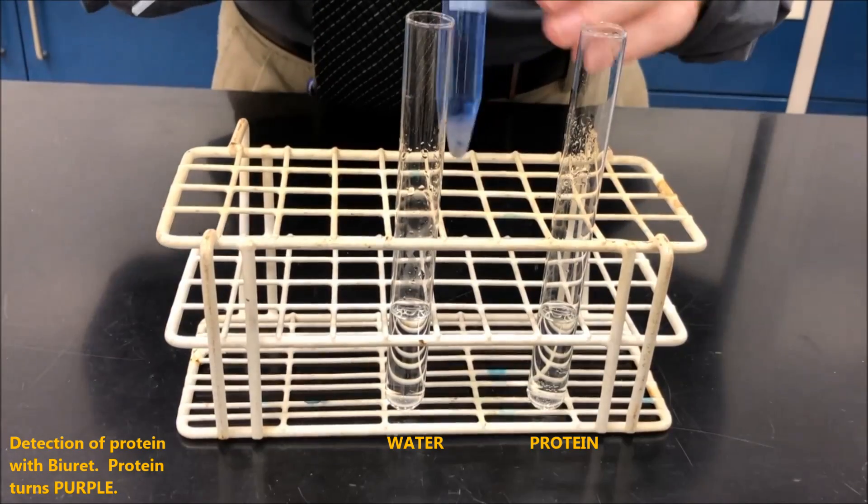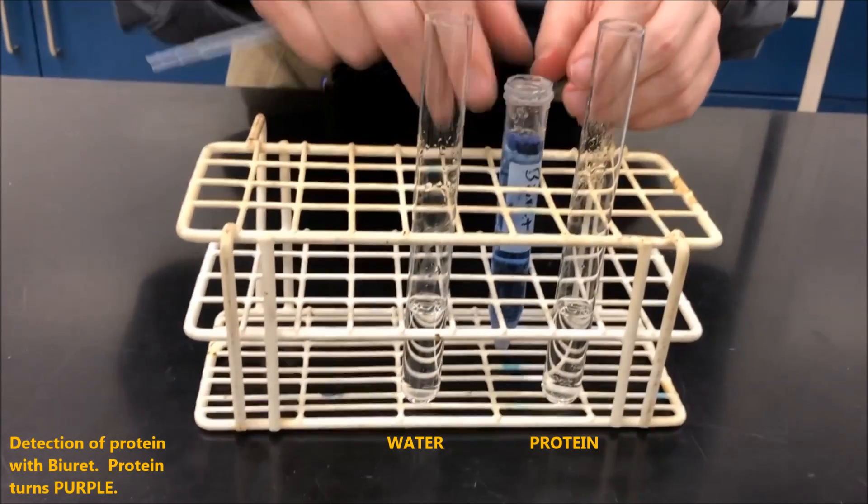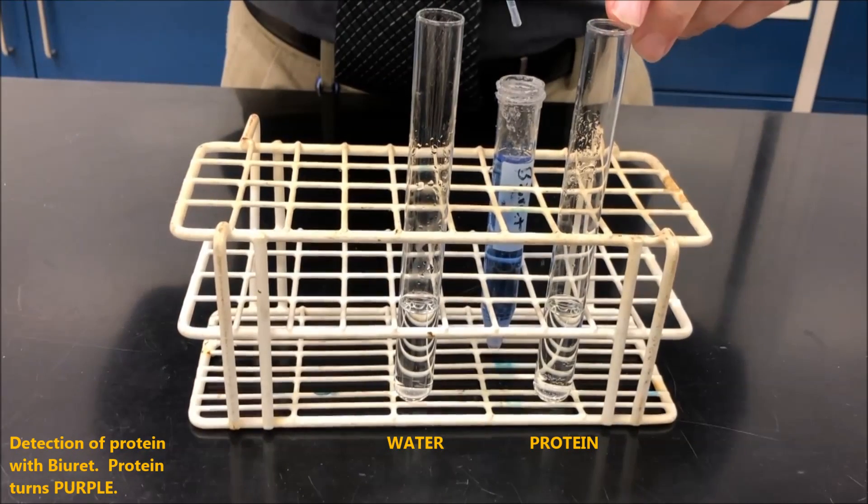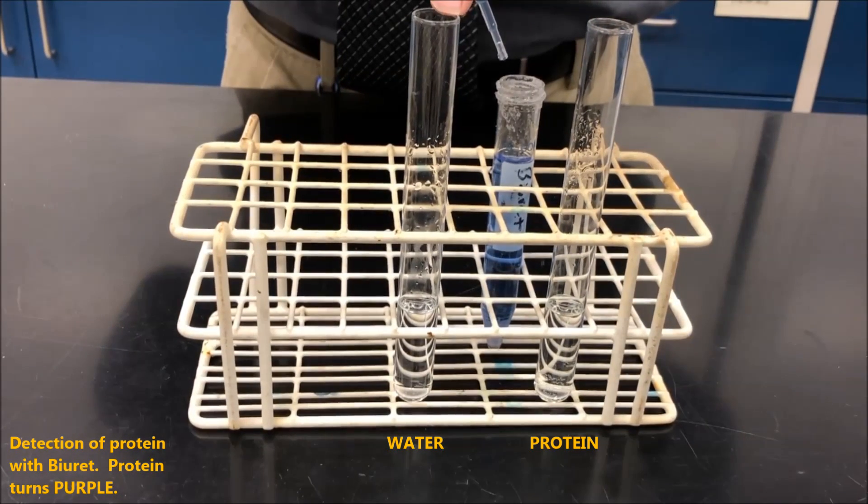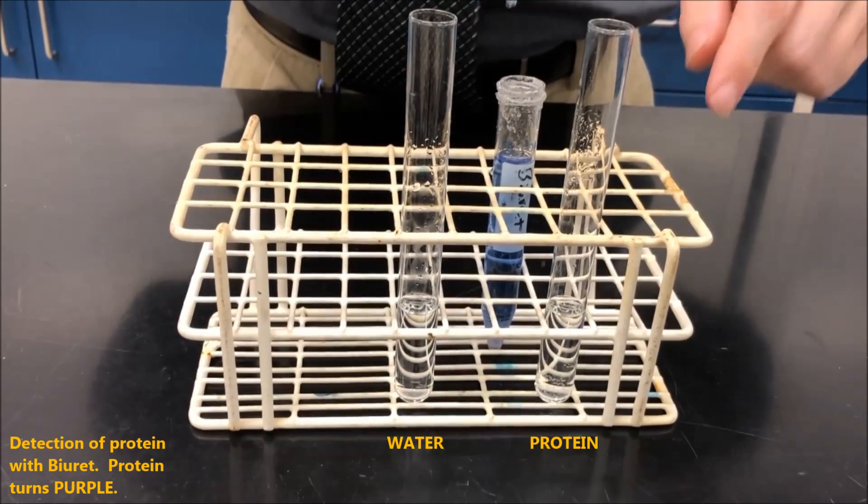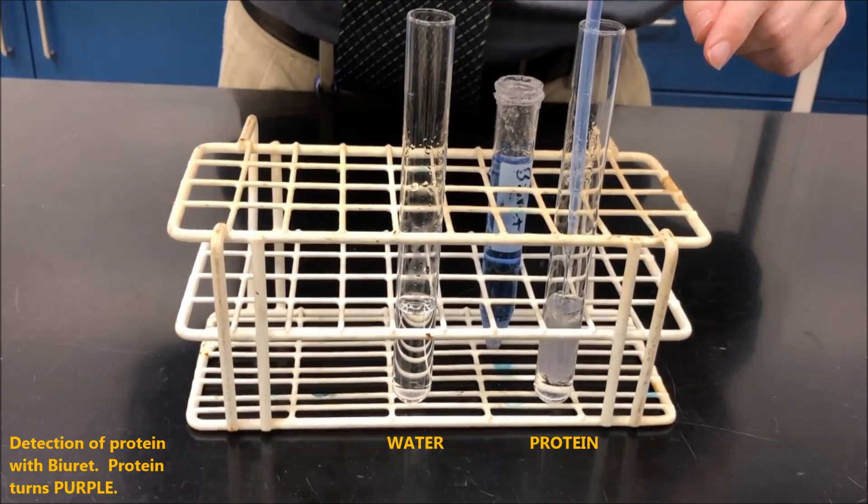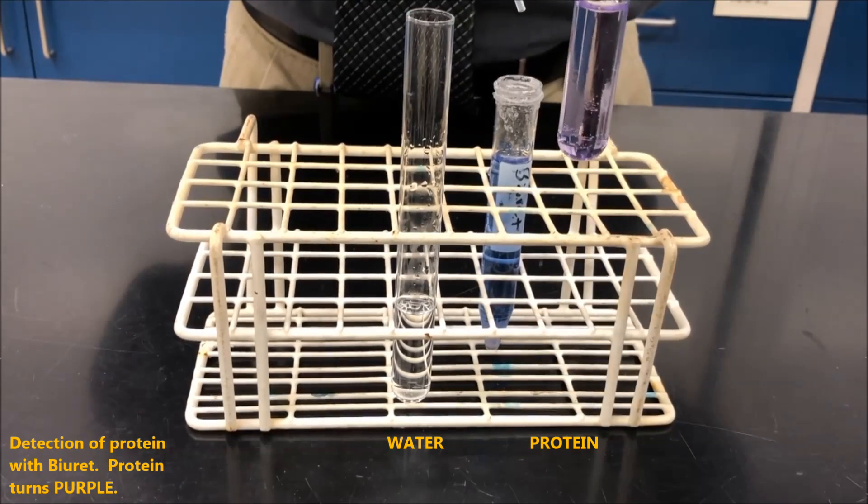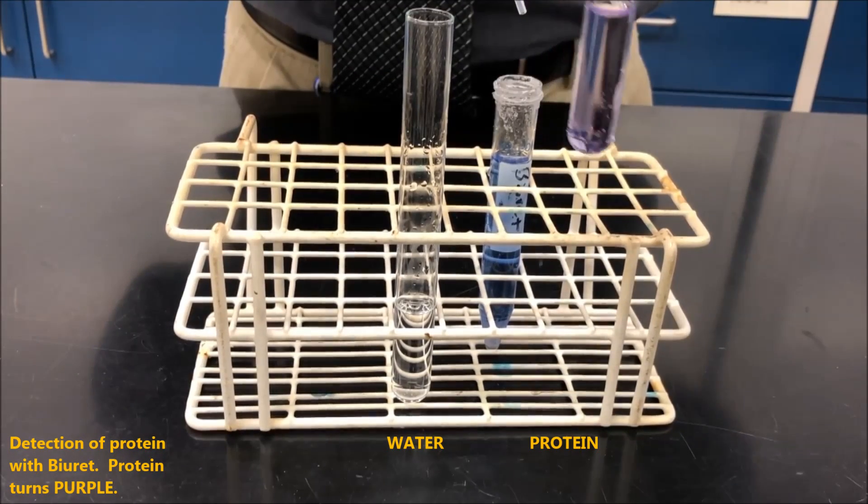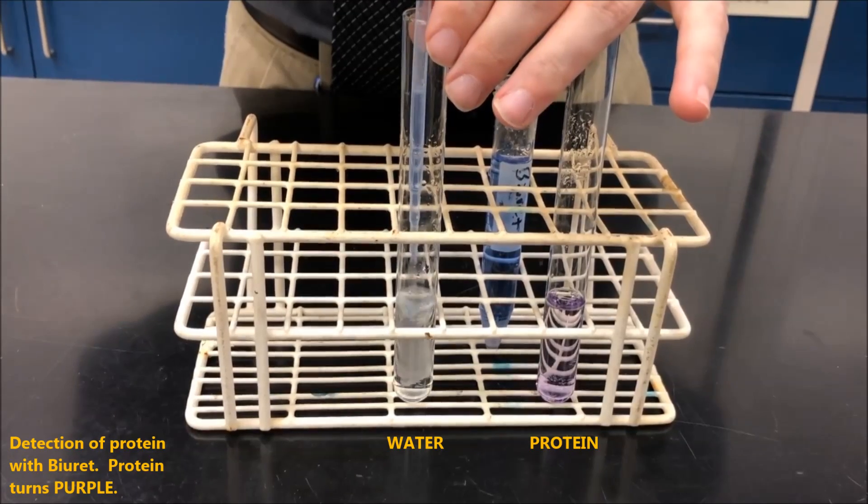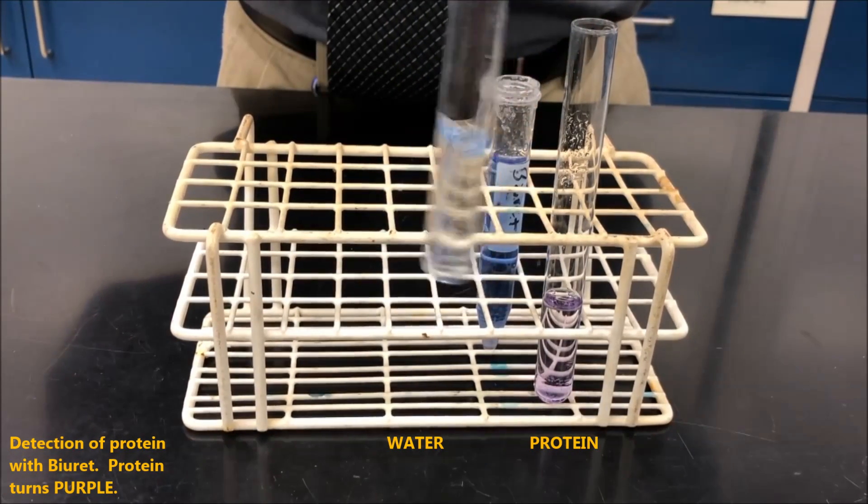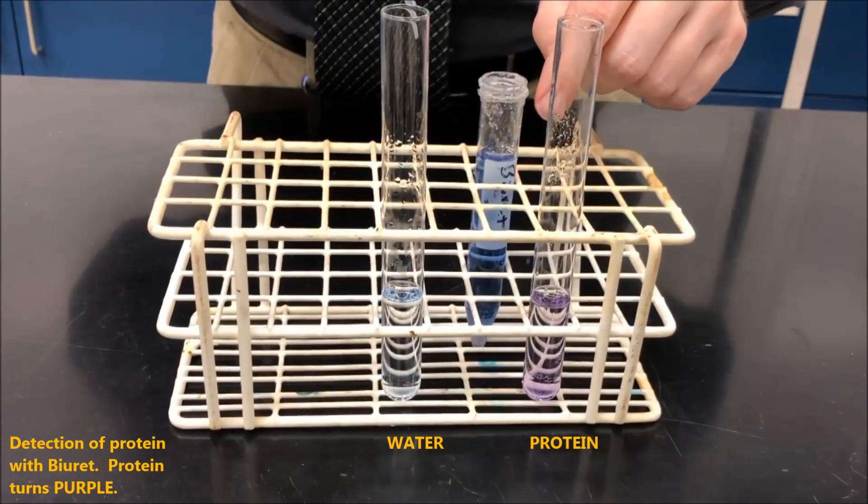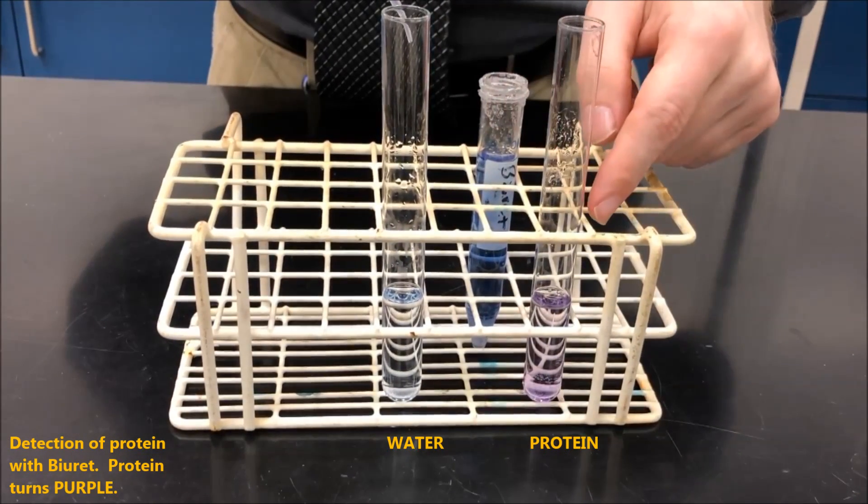So here is my solution of Biuret. I'm going to add a few drops. One of them contains protein, and one of them will serve as our control of just plain water. As you can see, the one that has protein turned purple, while the other one stays blue. So in the presence of protein, Biuret will turn purple.